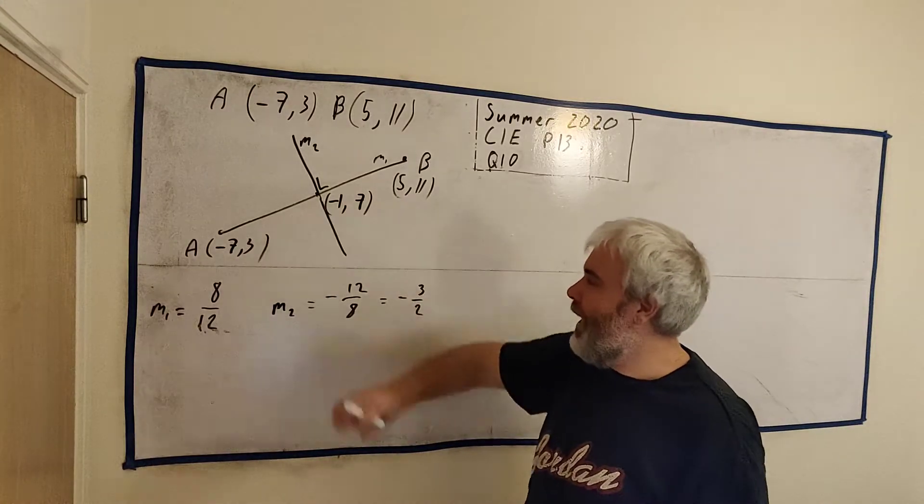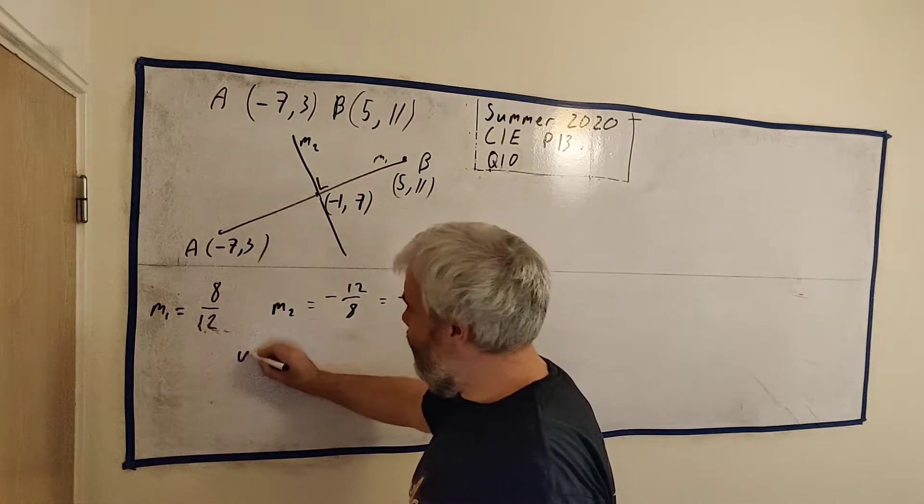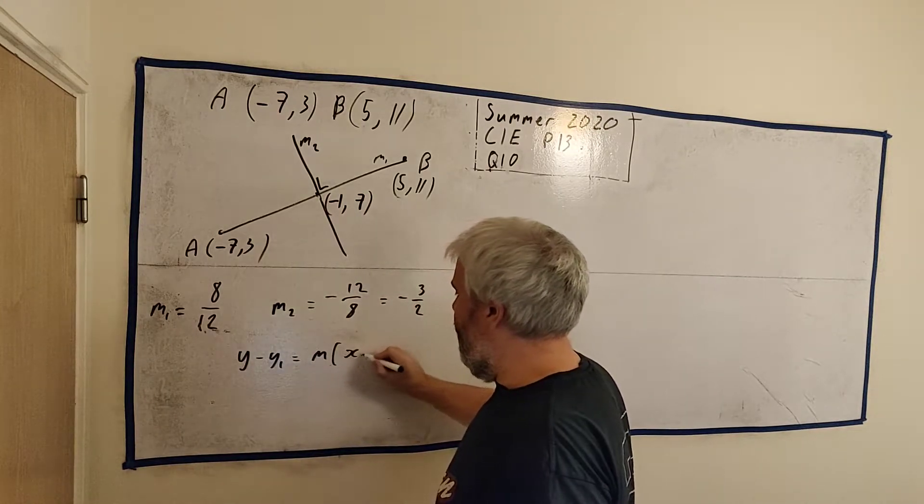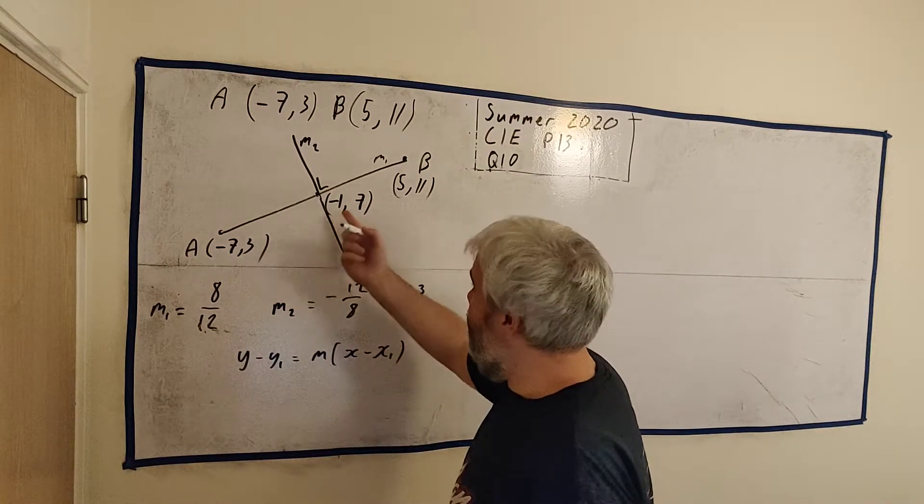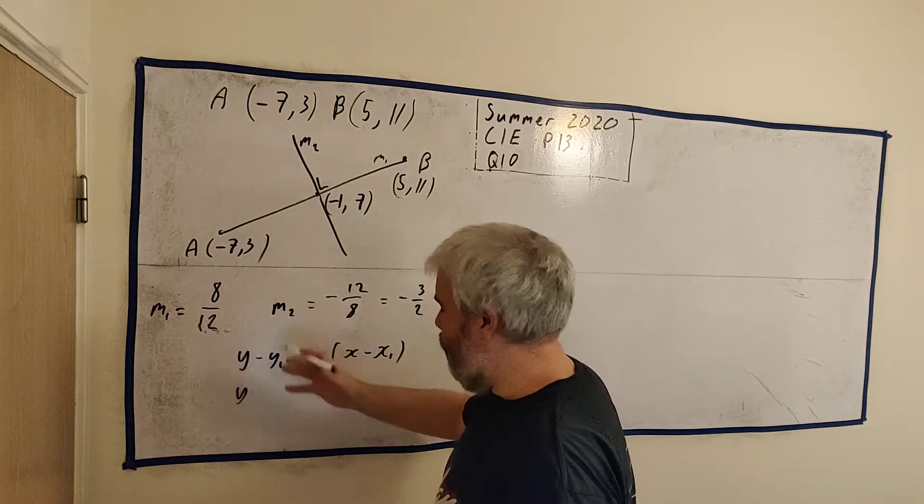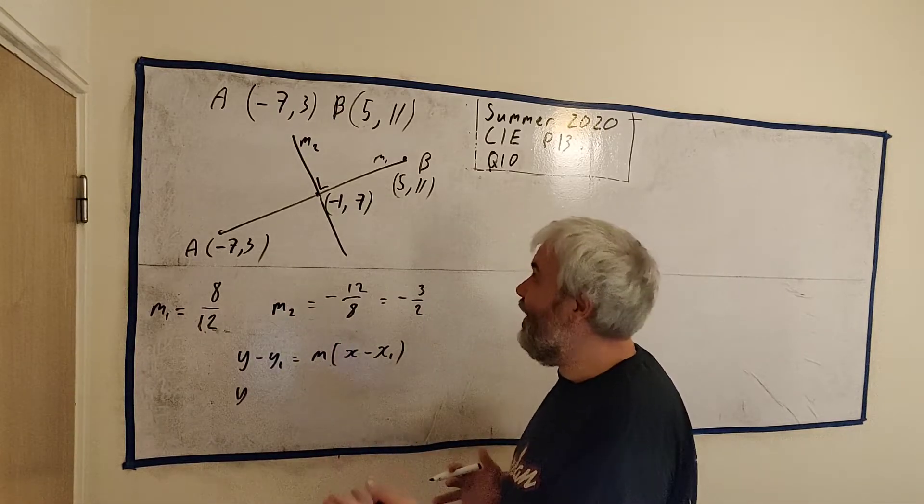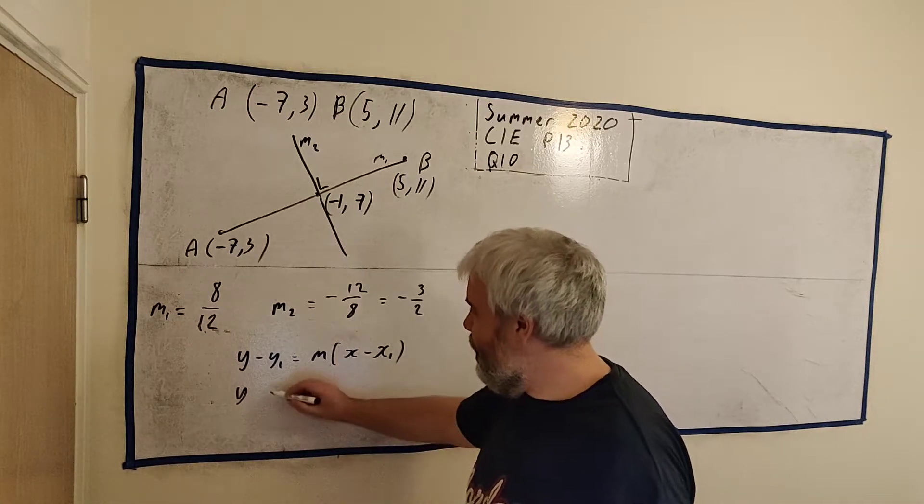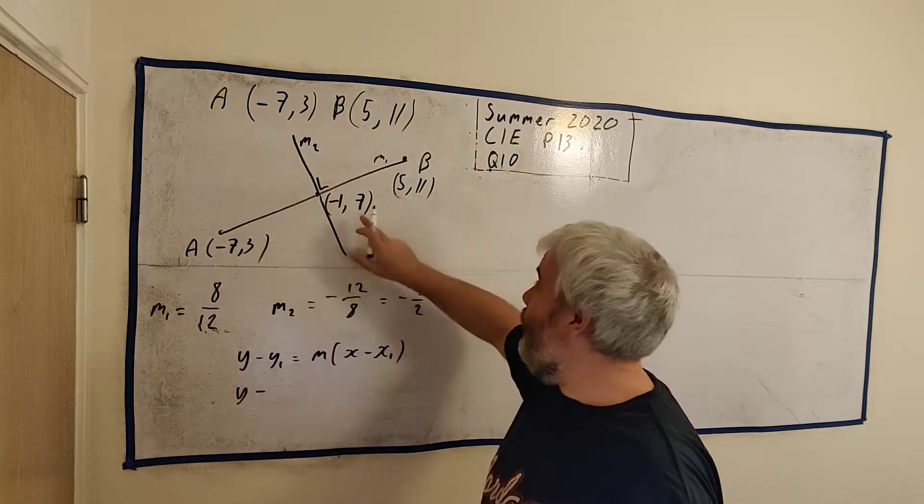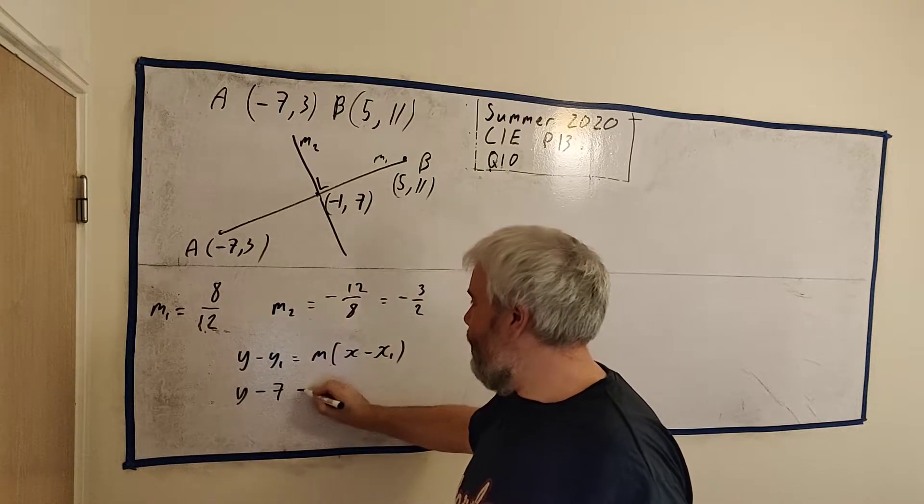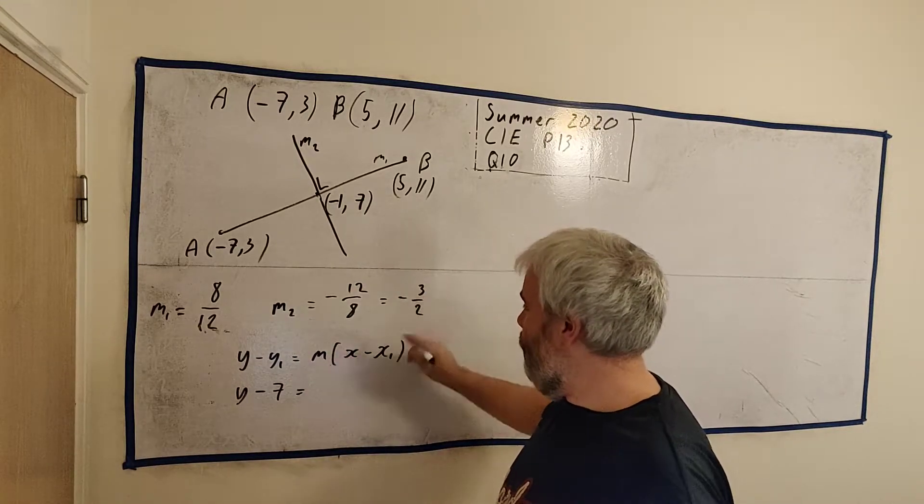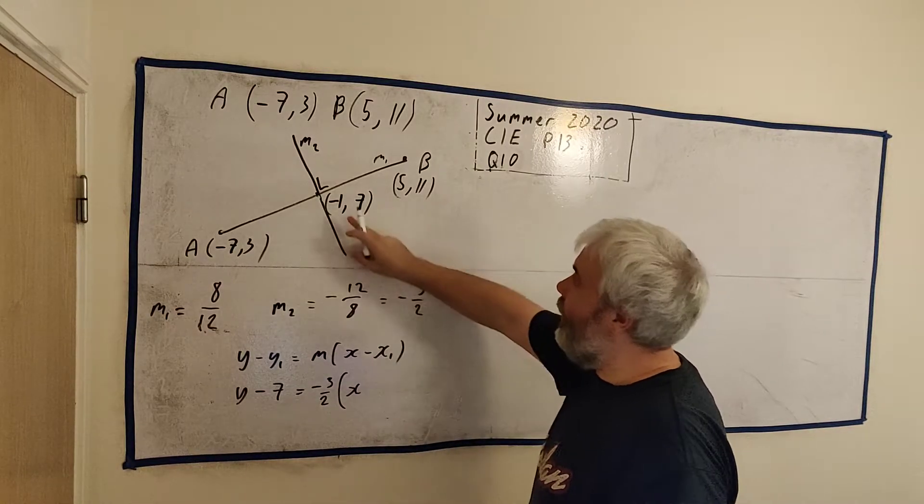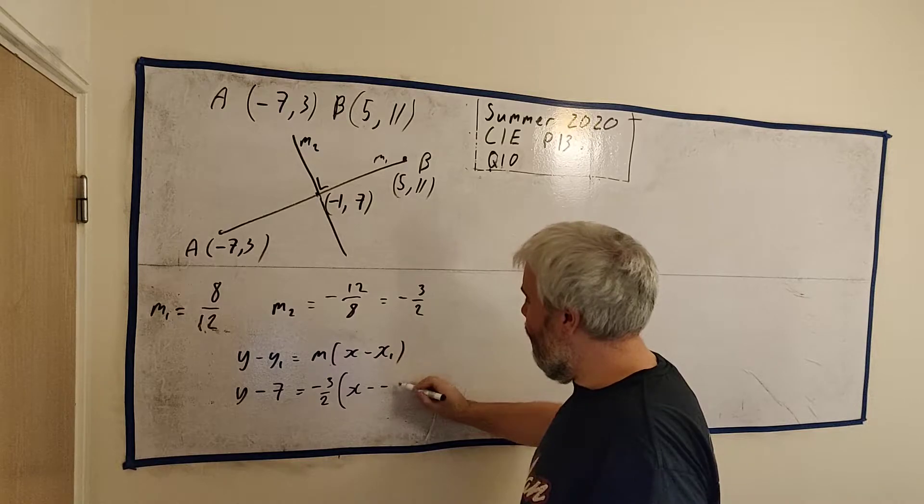So we have a slope and we have a point. The equation for a line is y minus y1 equals M times x minus x1. Fill in everything we know here. We don't know y, but we want y in our answer. Minus y1, this point's on the line. It's minus 7. Equals the slope, it's minus 3 over 2. x is x, and x1 is minus 1, so minus and minus 1.